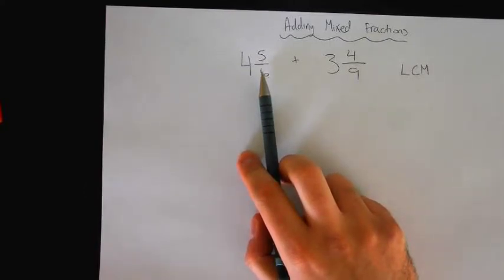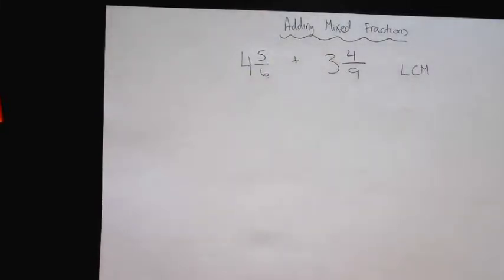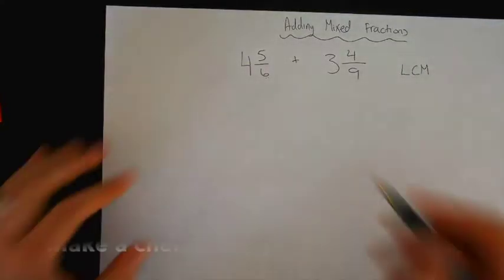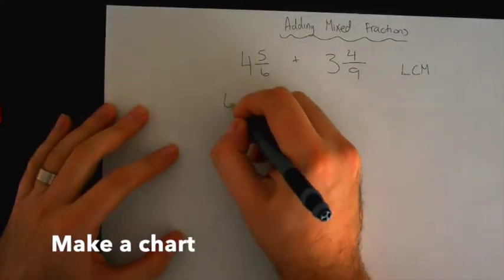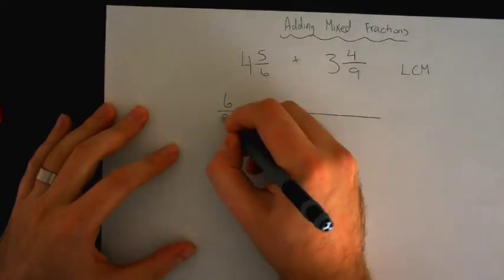But in this situation you might find that you are making an extra step that you don't really want. Aaliyah. Let's make a chart. So let's start with the 6 here. Let's start with the 9 here.